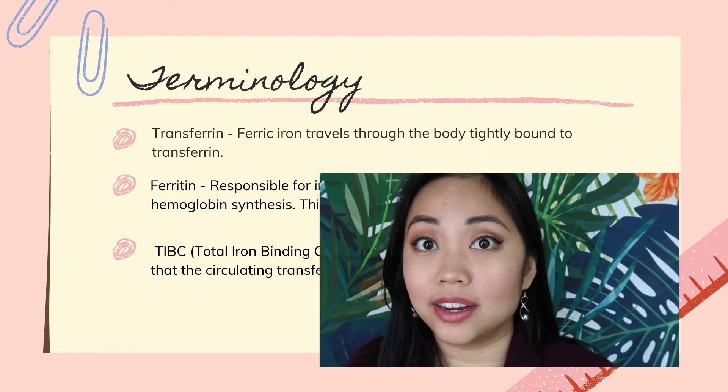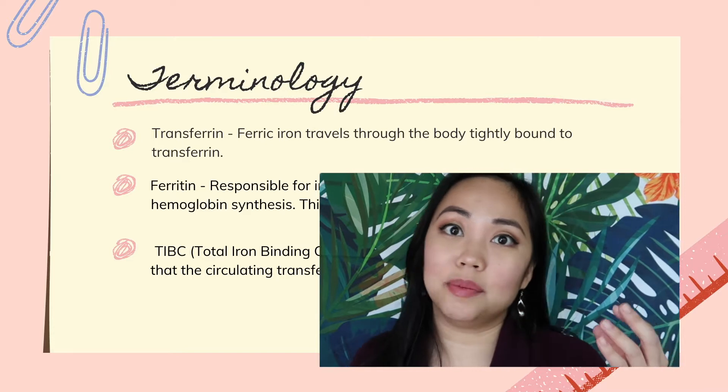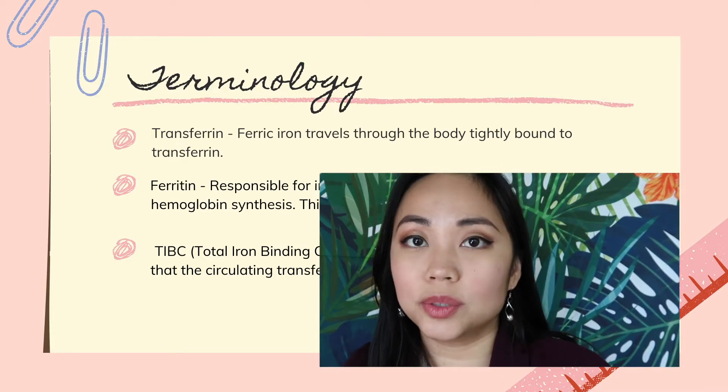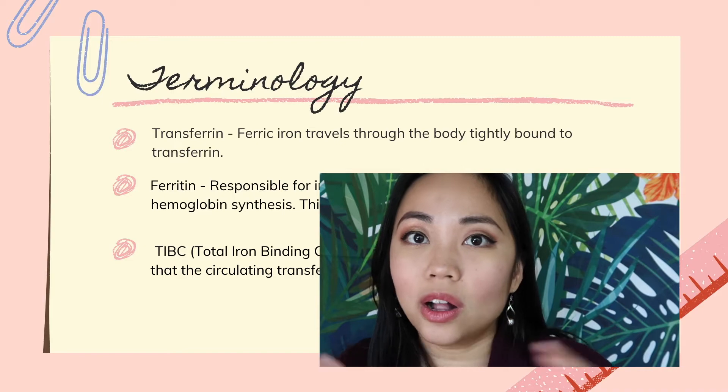Transferrin is a beta-globulin protein that tightly binds to iron and is the main protein responsible for distributing iron all over our body. Two-thirds of our total body iron is used for hemoglobin synthesis, and the excess one-third is taken to our bone marrow, liver, and spleen for storage.